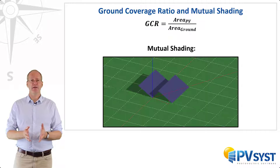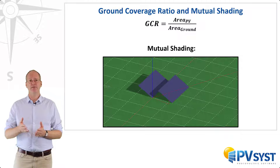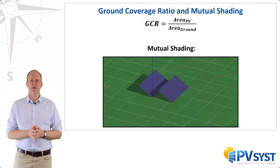However, we also have to consider mutual shading. Mutual shading refers to the shading of one shed of panels by another shed. To account for this, it is important to understand how to calculate the size of the shadow of a shed.